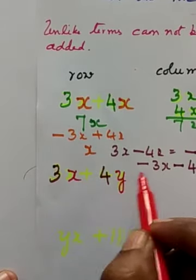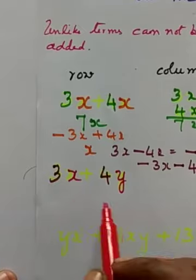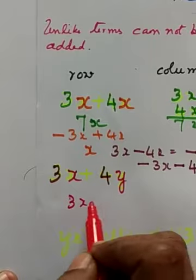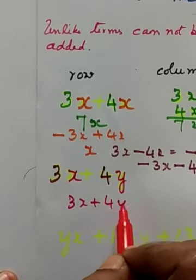Algebraic coefficient x and y. Unlike algebraic terms, unlike terms. So we cannot add. The answer remains the same. 4x plus 3x plus 4y.